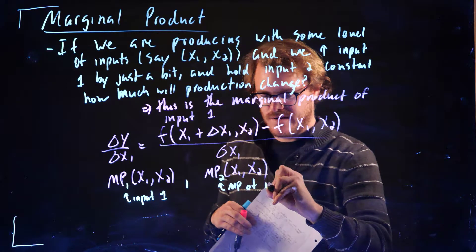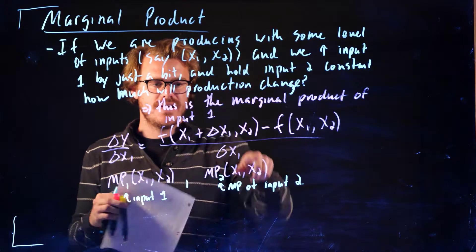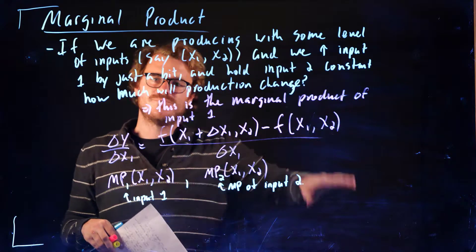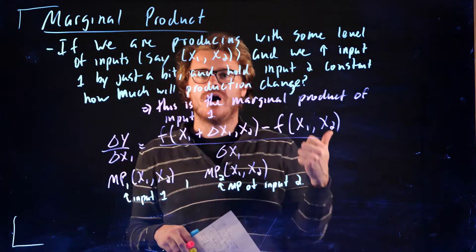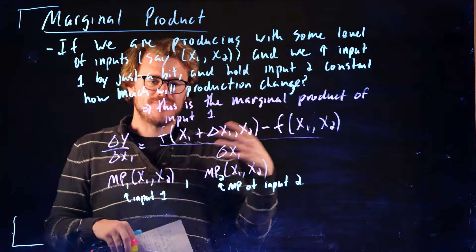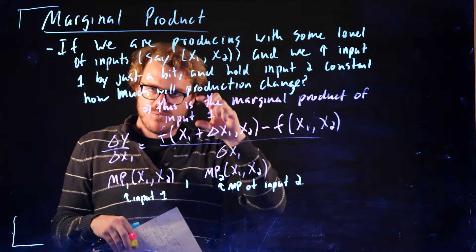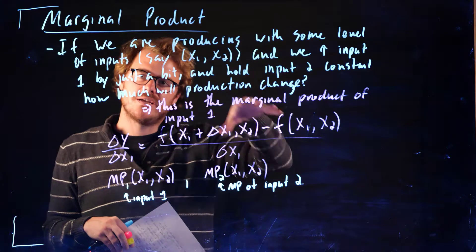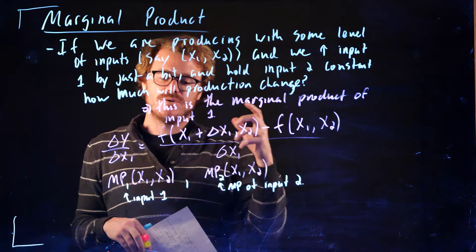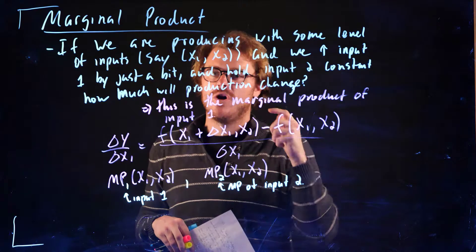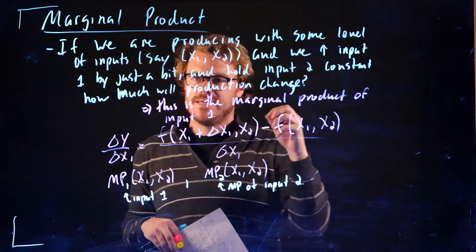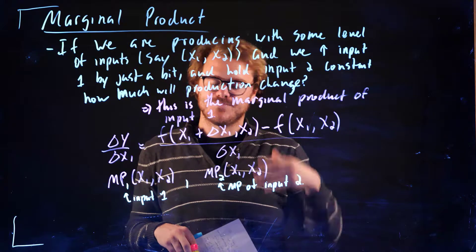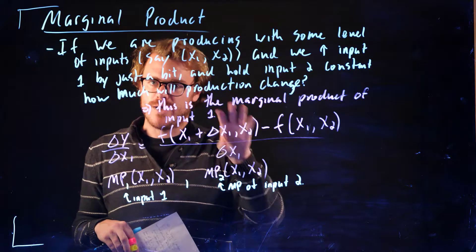Similarly, MP of x1, x2 with a 2 here would be the marginal product of input 2 — that's the notation we're going to use, and now we'd be changing the amount of input 2. Often we say we increase the amount of input 1 by 1, holding input 2 constant — that's okay as a shorthand. Really, we want that change to be a small change, because eventually we're going to think about this in terms of derivatives, and derivatives are small changes. It's a small change in x1 having this effect on output, holding x2 constant.